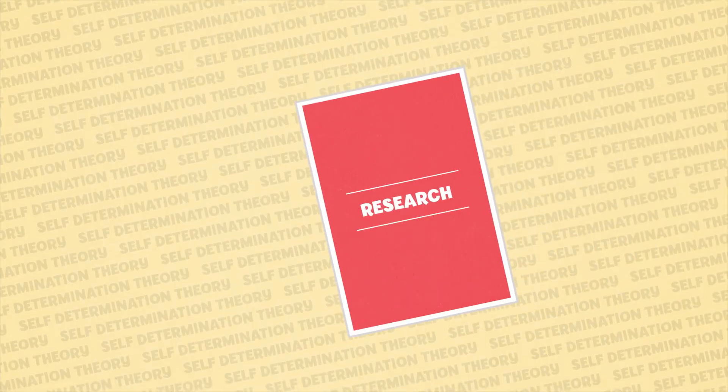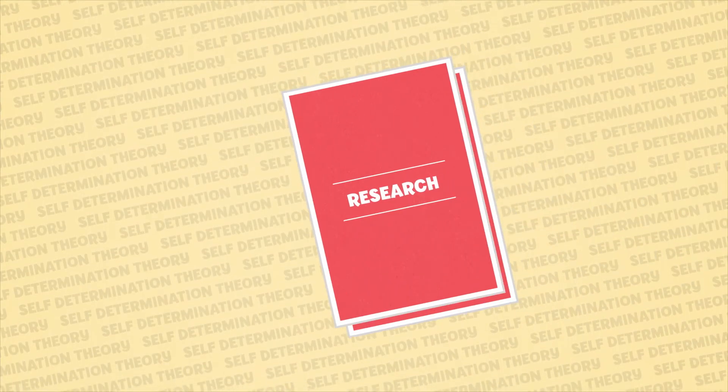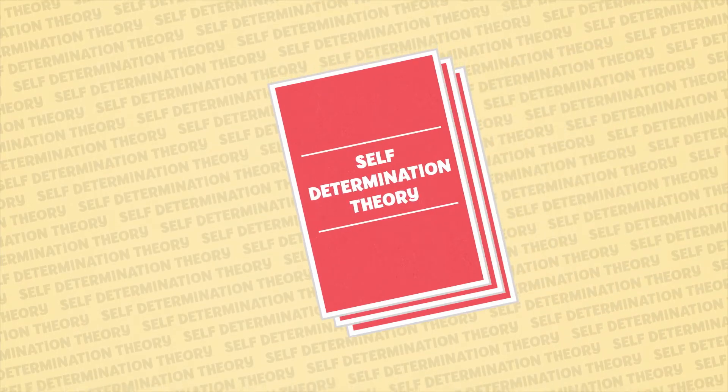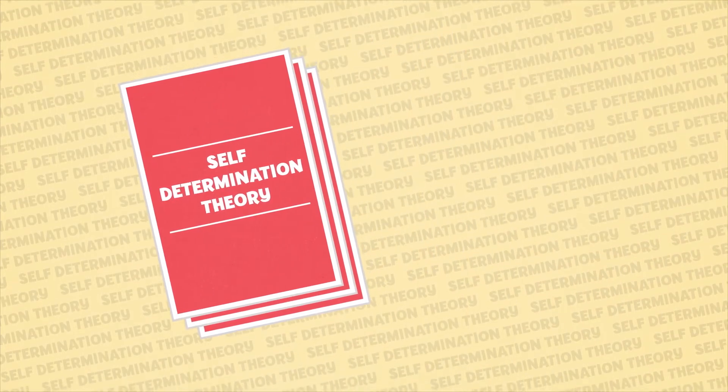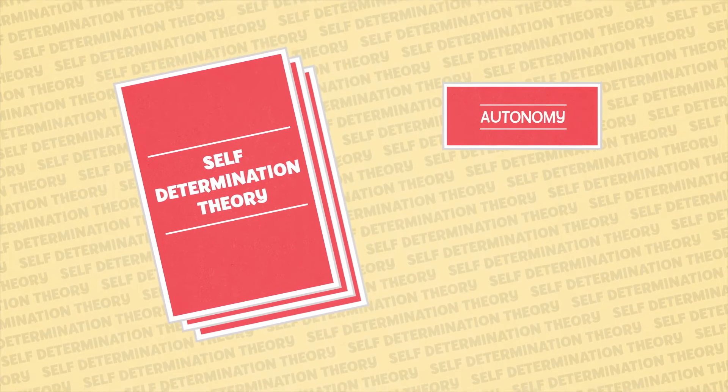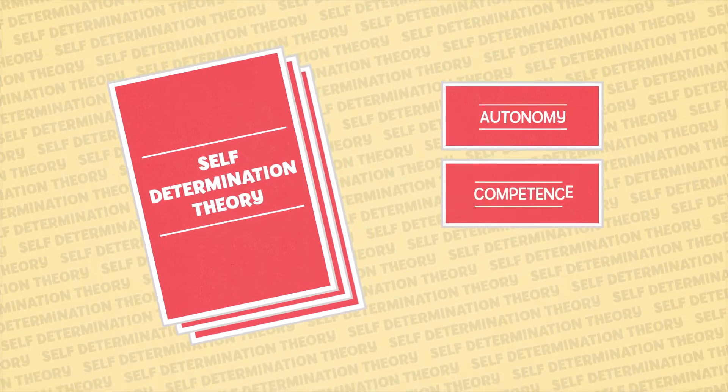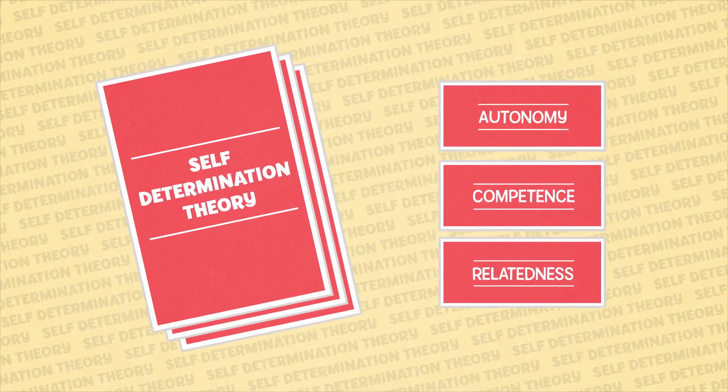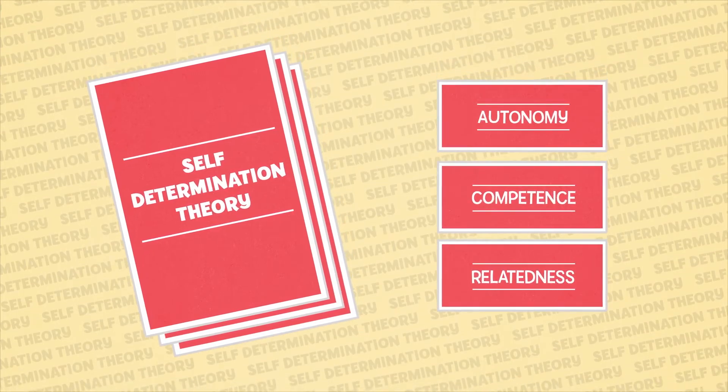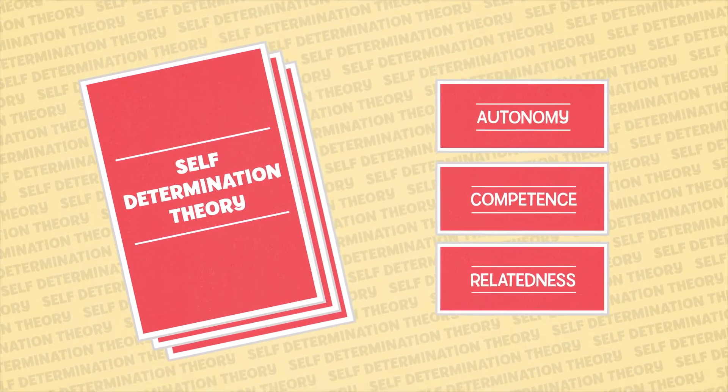According to research in psychology and cognitive science, self-determination theory can help Parker find the motivation she needs to complete and learn from her solar system model. Self-determination theory states that when three important needs are met, students are better positioned to complete extrinsically motivated tasks.